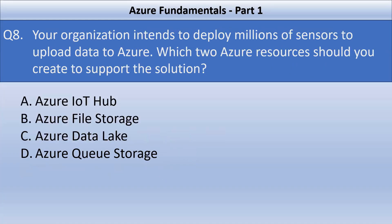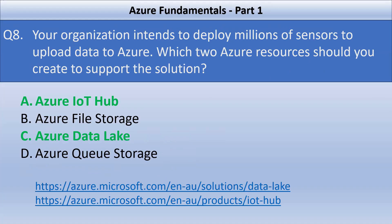Your organization intends to deploy millions of sensors to upload data to Azure. Which two Azure resources should you create? The two correct options are Azure IoT Hub and Azure Data Lake. Azure Data Lake can be used to store data from sensors, and IoT Hub can be used for processing that data.